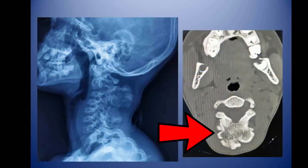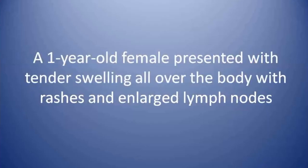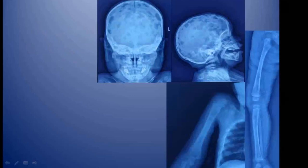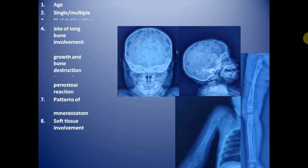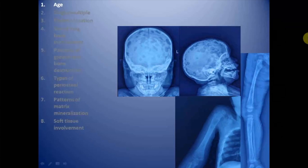This is the case of a one-year-old female who presented with tender swelling all over the body with rashes and enlarged lymph nodes. These are multiple radiographs of the patient covering the skull and long bones of upper and lower limbs. We are going to evaluate this lesion on the basis of multiple criteria.